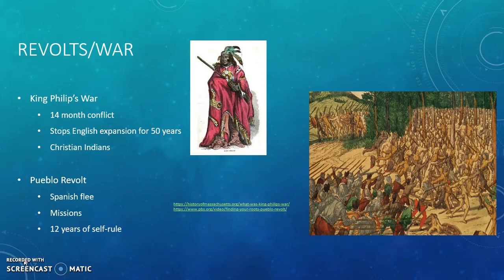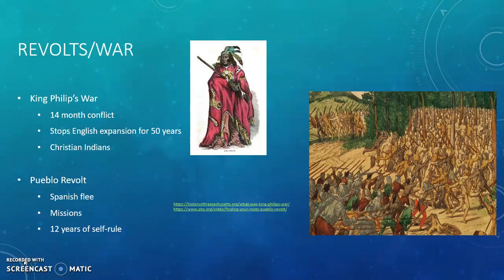One of the ways that Indian people limited the power of different European powers over time was to revolt against what was happening. We see this in two separate contexts during this time period: the first in the East with King Philip's War, and the second in the West with the Pueblo Revolt. Both happened at similar time periods and as a result of similar circumstances. Both Indian nations and European powers had basically lived and worked together peacefully in some capacity for roughly a hundred years.